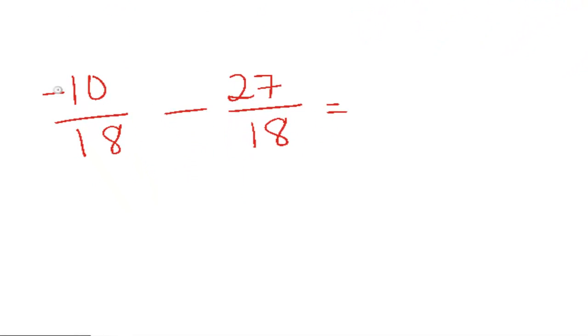Now when I'm subtracting and I'm dealing with negative numbers and positive numbers, I like to change it into adding the opposite. So I'm going to change this minus sign to adding a negative 27. Okay, now I have my common denominator of 18. So I'm ready to write the denominator as 18. And then in the top, we just add the two negative numbers. Negative 10 plus a negative 27 is a negative 37.